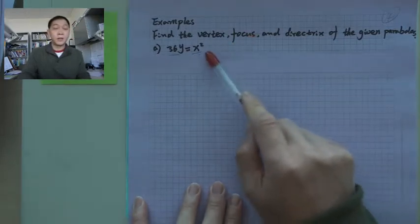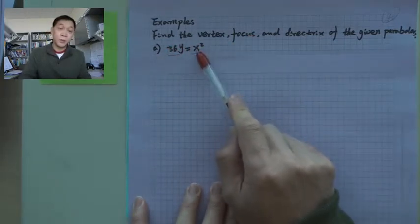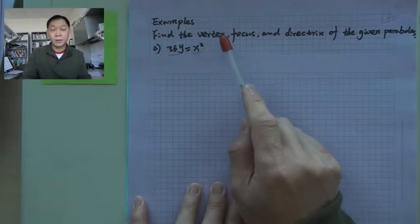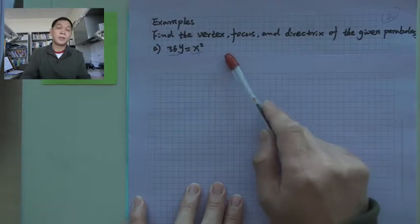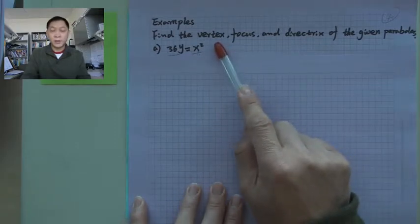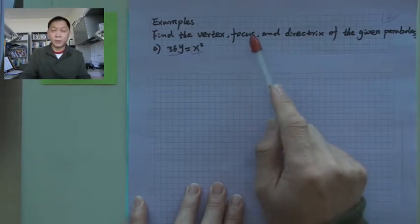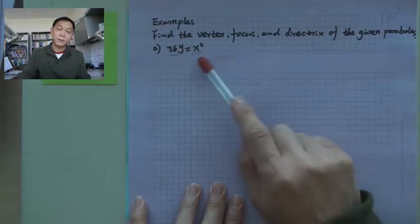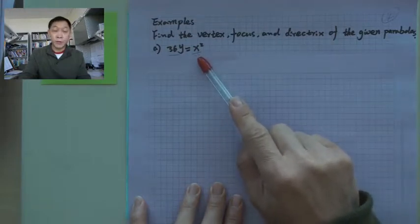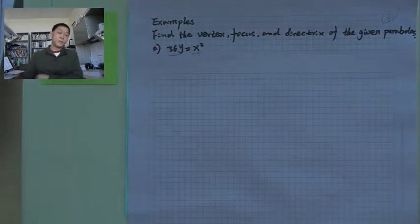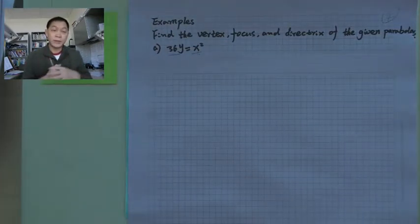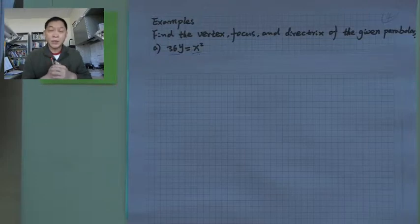Basically, from this equation, we should be able to tell those three elements: where the vertex is, where the focus is, and where the directrix is. Only from the given equation. So from the algebraic form, we need to find out the geometric point or the lines.